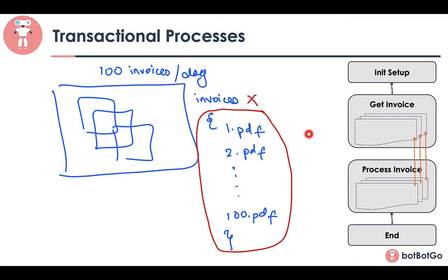With this particular process, you are making each of these invoices — or each of these transactions — a separate entity. By creating this independence of transactions from each other, we are able to scale our automation. Now imagine a case where instead of 100 invoices, you are handling 1,000 or even 100,000 invoices. Even if one or even 100 of the invoices are faulty, you will still be able to process the rest of the files. This is why the transaction process serves as a backbone of the RE Framework and helps in scaling automation.